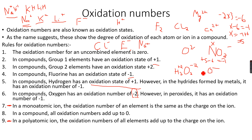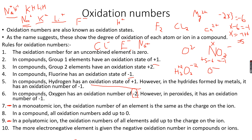Now, the rule states that the more electronegative element is given the negative oxidation number in compounds or ions. For example, consider the compound ICl₃. Chlorine is more electronegative than iodine, so chlorine is given the negative oxidation number of minus 1.